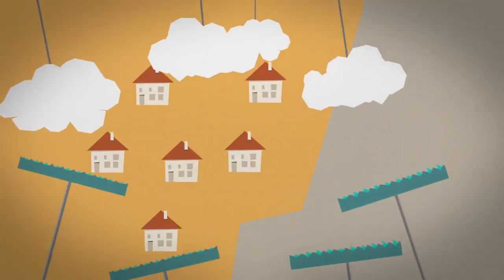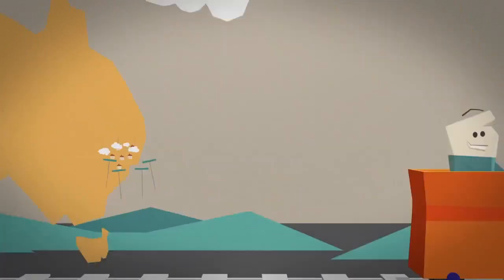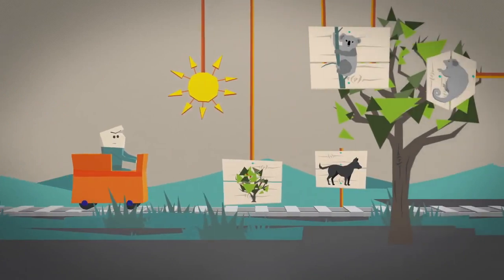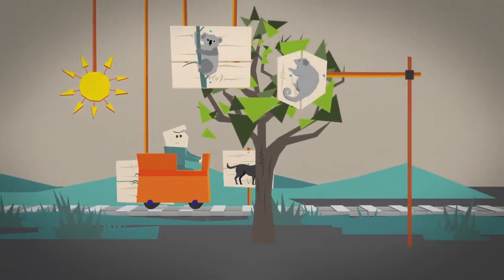Some areas will sometimes see too much water. Other areas won't get enough. Temperature increases will affect plants and animals, driving some towards extinction.